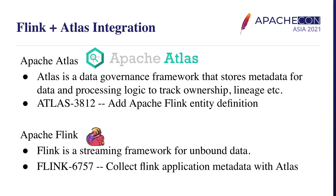The second piece of software is Flink. It is a streaming processing framework for bounded and unbounded data. The upstream JIRA is Flink-6757: collect streaming application metadata with Atlas. To integrate Atlas and Flink together is to simply enable users — possibly enterprise users — to check the input and output data of a Flink job, their owner, and how different Flink jobs are connected to each other through the data they produce, which is the lineage. This is a very strong requirement for many large corporations for security practice. So far in Cloudera we have integrated Flink streaming jobs for different connectors: HDFS, Kafka, HBase, and Kudu, with plans to gradually support more.